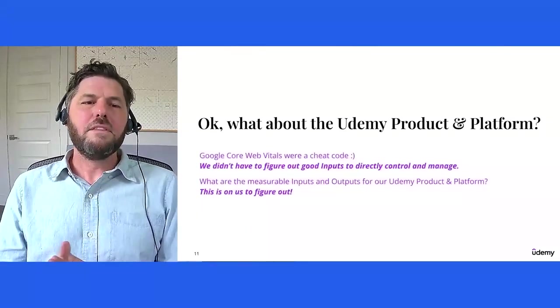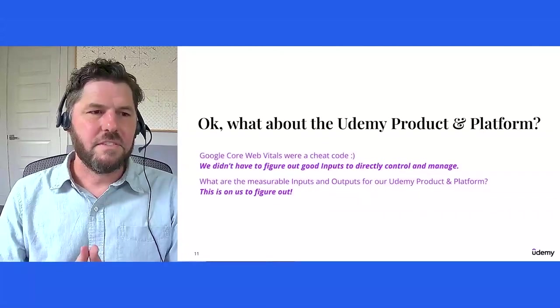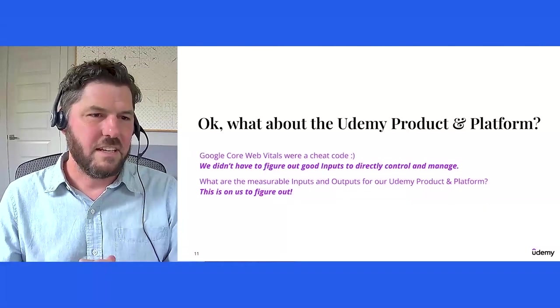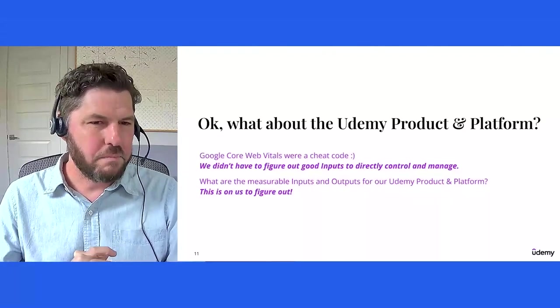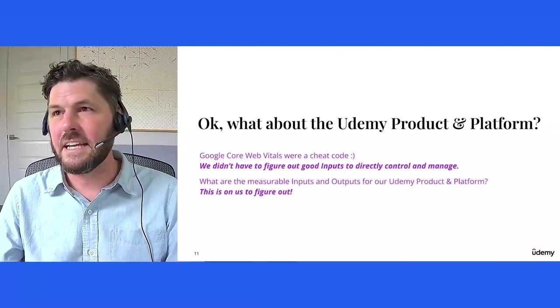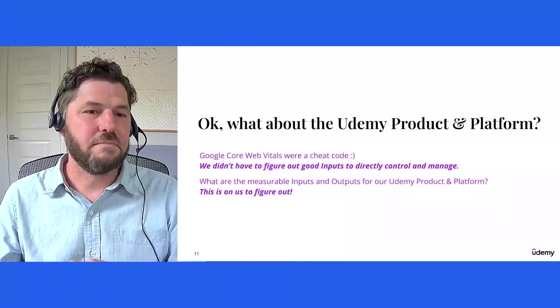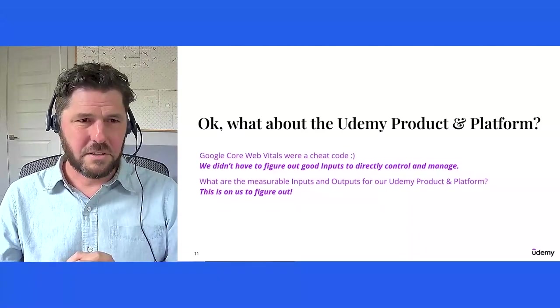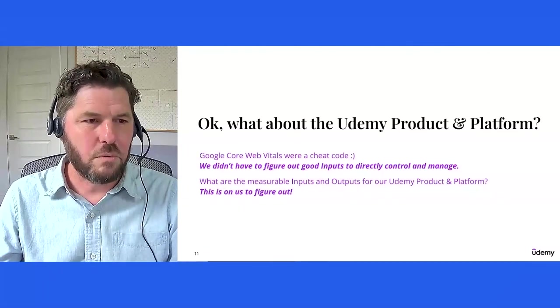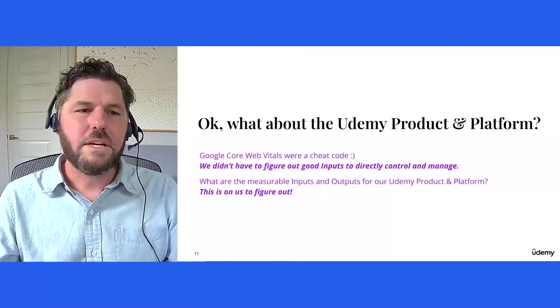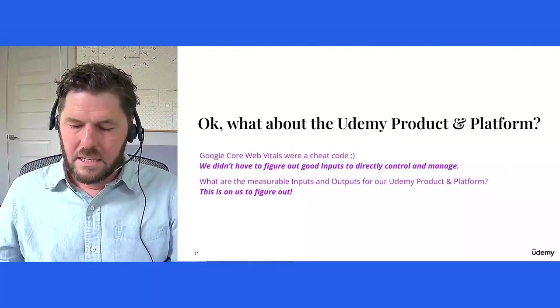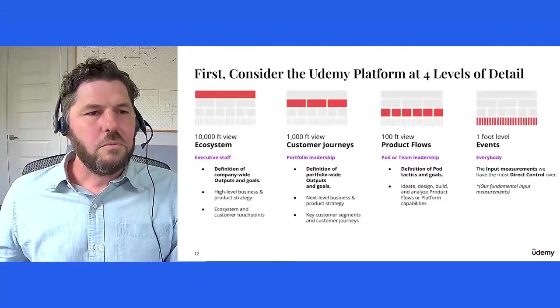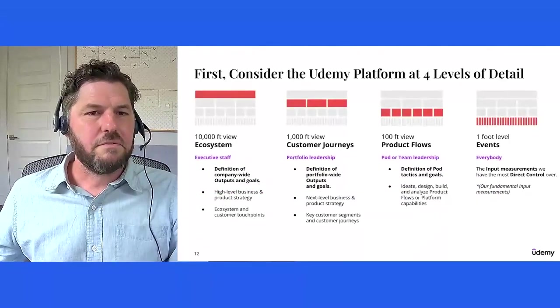So what about the Udemy product and platform more specifically? Google Core Vitals were effectively a cheat code, like god mode in a video game. We didn't have to figure out good inputs to directly control and manage the output that we were trying to drive, SEO, search performance. In the case of a product, though, such as Udemy or any of the other products that you all are working on, what are the measurable inputs and outputs for your product and platform? This is tricky and it's on us to figure out.